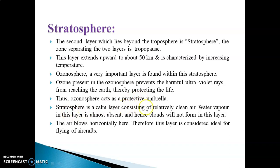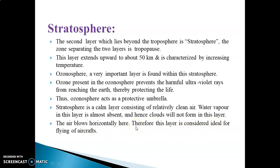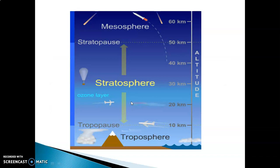The Stratosphere is a calm layer where relatively clean air is present. Water vapor is almost absent in this layer, hence clouds will not form here. The air blows horizontally, and therefore this layer is considered ideal for flying aircraft. This is the diagram for the Stratosphere.